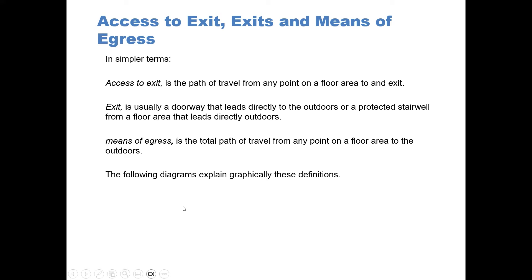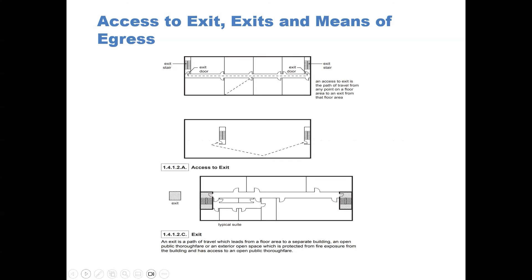The following diagrams explain graphically these definitions. You can see in our diagram that access to exit is any point on the floor area to the exit door leading into the stairwell. Exit is the actual exit stairwell in this case.